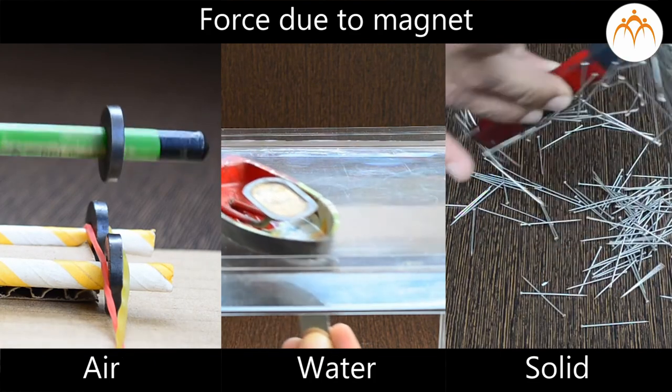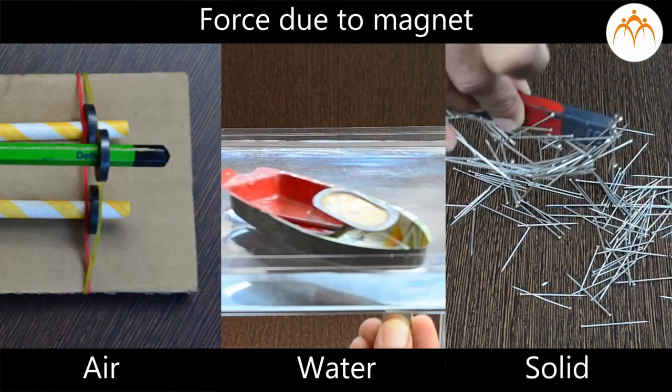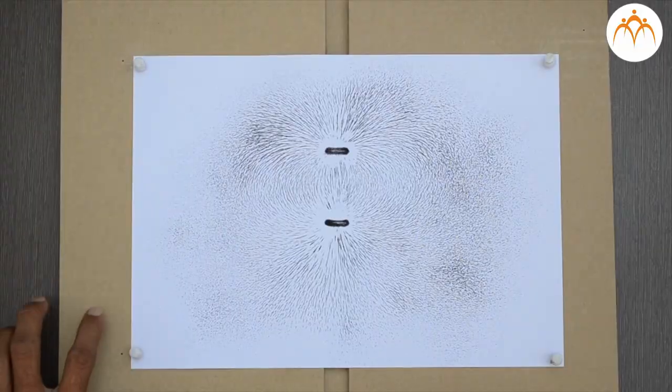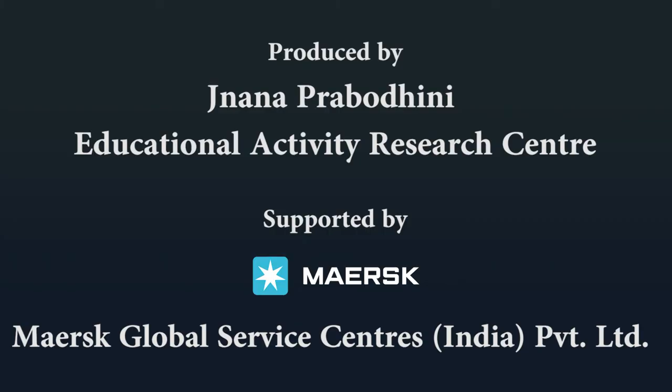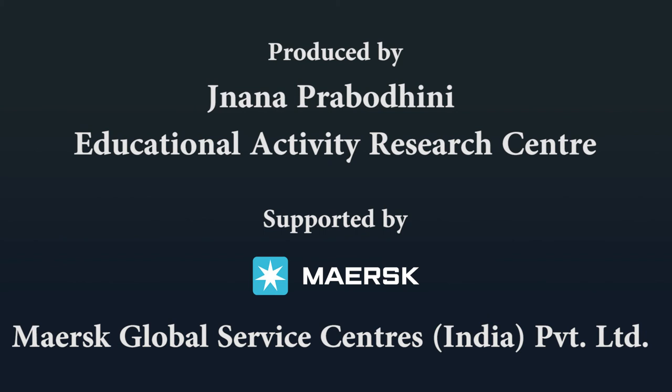Magnets work across mediums like air, solids and liquids. Magnetic field can be visualized with the help of iron filings.